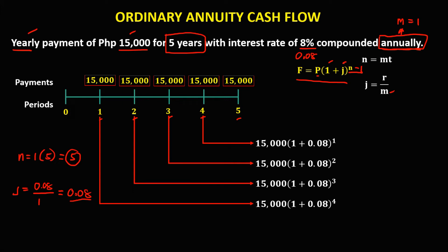For the fifth year, n minus 5 gives an exponent of 0, so this becomes 15,000 pesos. Because any number raised to the power of 0 equals 1, so (1 + 0.08)^0 equals 1. This completes the cash flow.